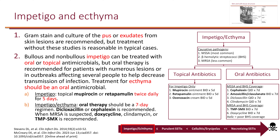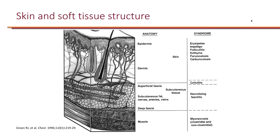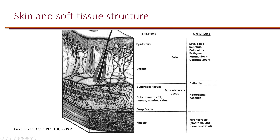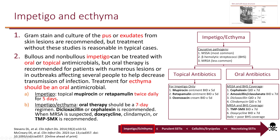Here are the IDSA recommendations for the management of impetigo and ecthyma. Impetigo is an infection of the epidermis, while ecthyma can extend into the dermis layer, making it deeper. This distinction is important when deciding between topical and oral agents. The most common causative pathogens are MSSA and beta-hemolytic strep.